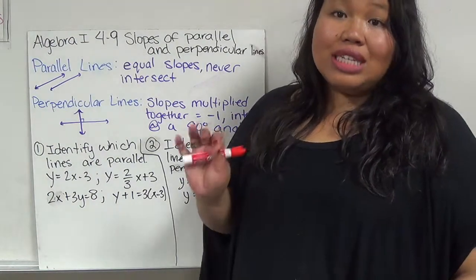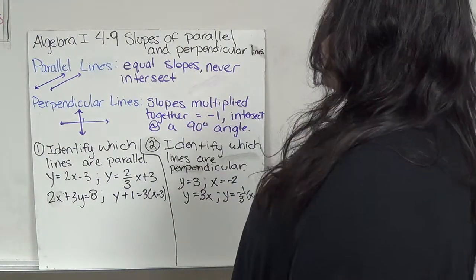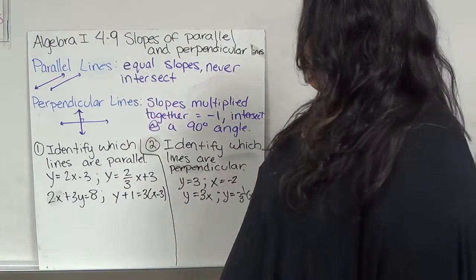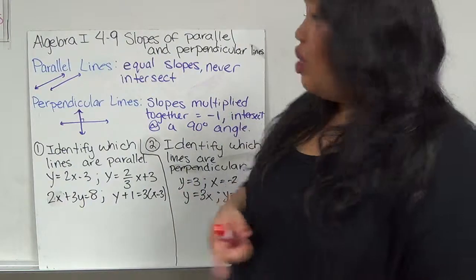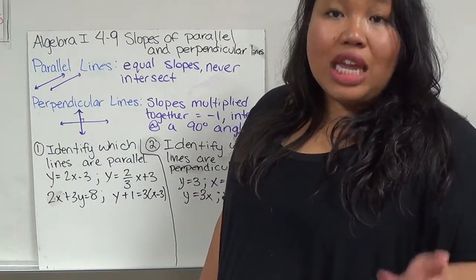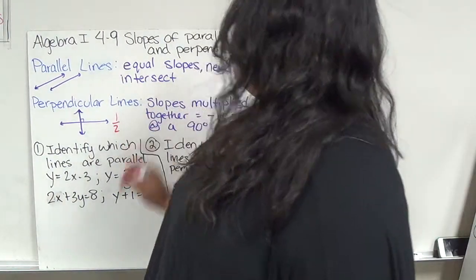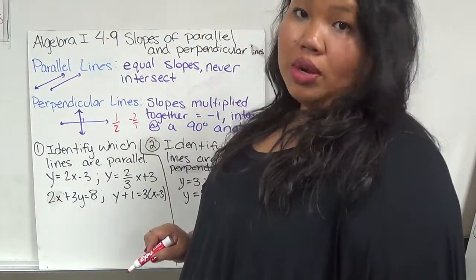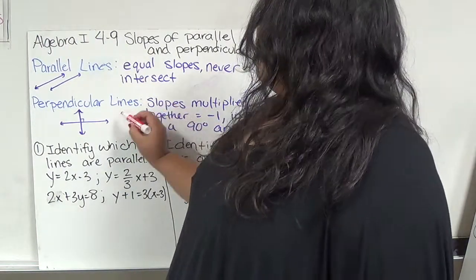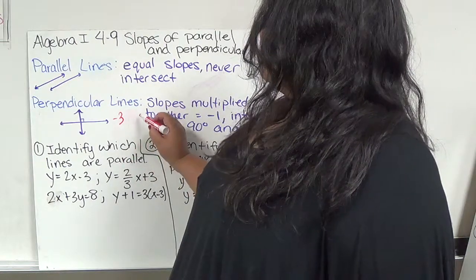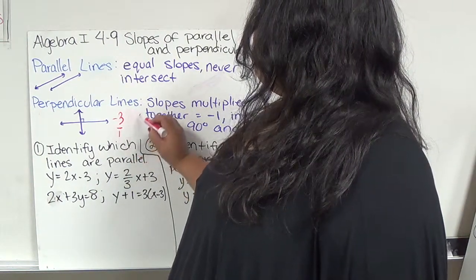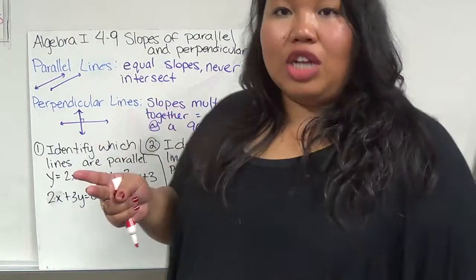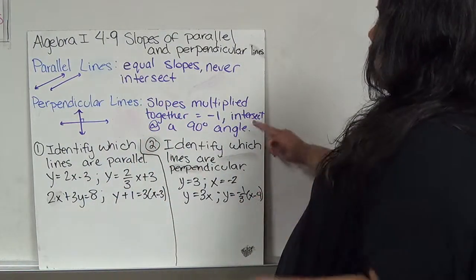Perpendicular lines intersect at a 90 degree angle. Their slopes, when you multiply them together, equal negative 1. This is called negative inverse. For example, if I have a slope of 1 over 2, the opposite would be not just 2 over 1, but negative 2 over 1. If I have a slope of negative 3, the perpendicular slope would be 1 over 3, positive because this is negative. So it's the opposite sign and flip fraction. That's what perpendicular slopes look like, and they intersect at a 90 degree angle.